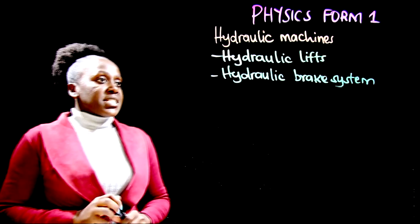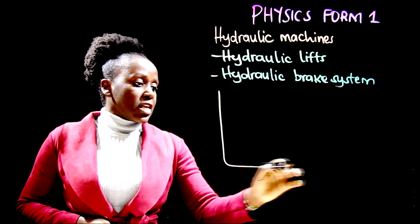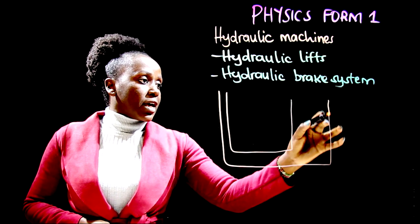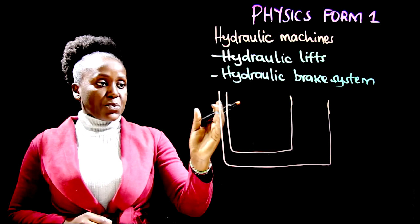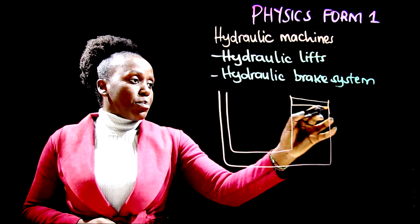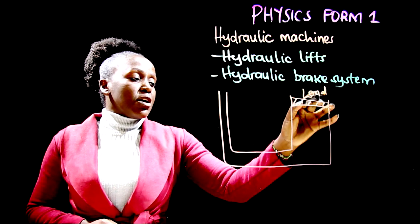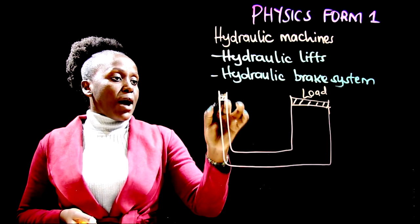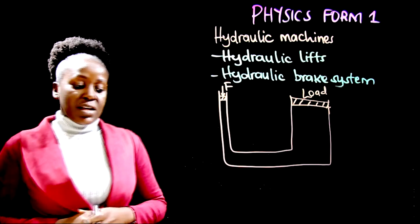Now let us begin by discussing the hydraulic lift. A hydraulic lift looks like this. As you can see, we have two pistons — a smaller side and a bigger side. The bigger side is where you place your load, maybe a car or something very heavy. The smaller side is where you apply your force.